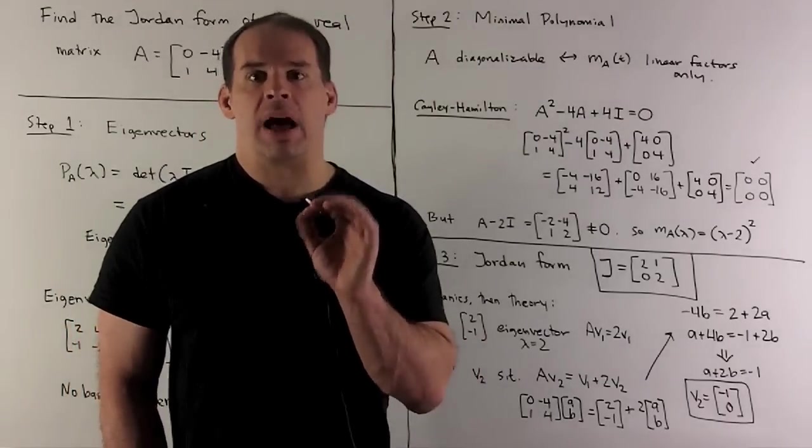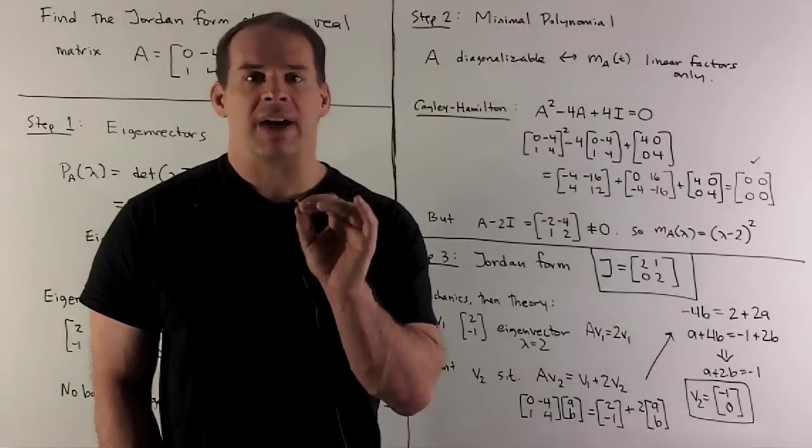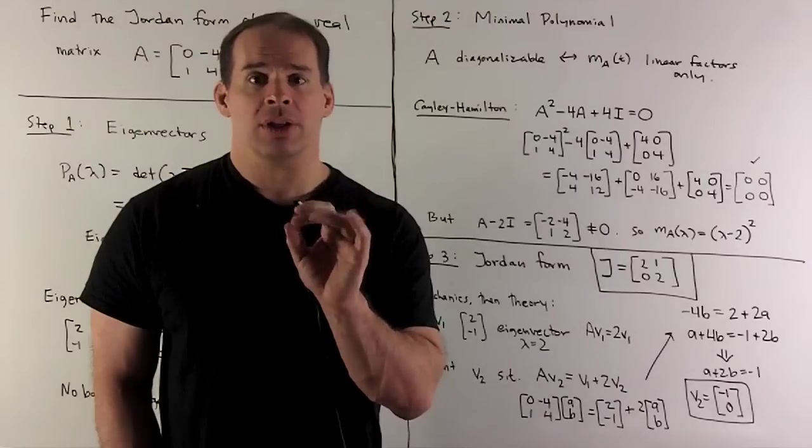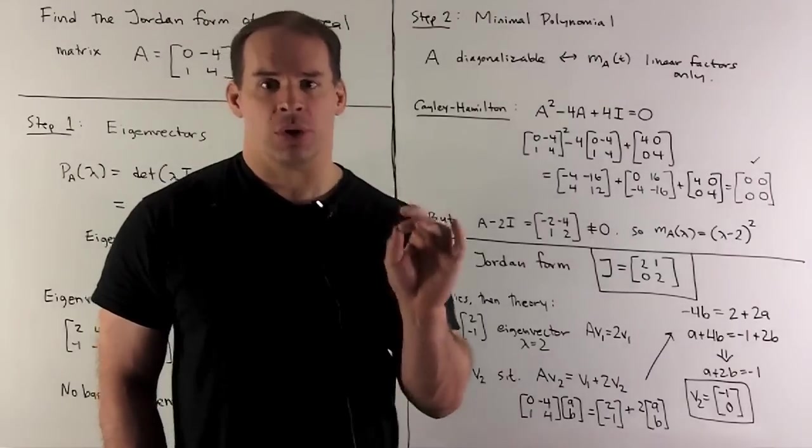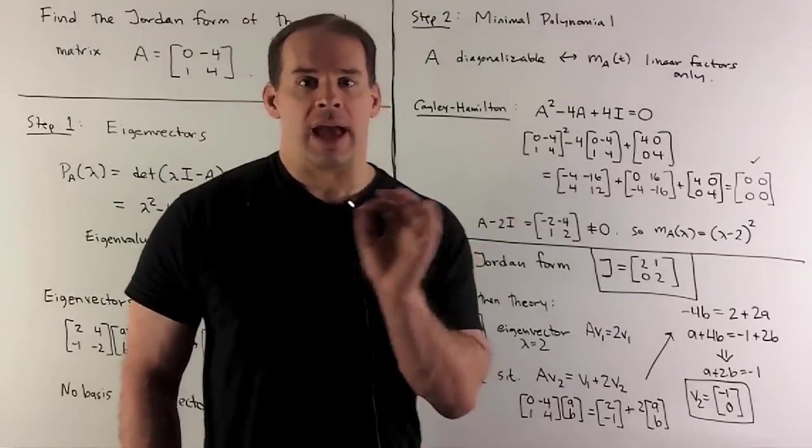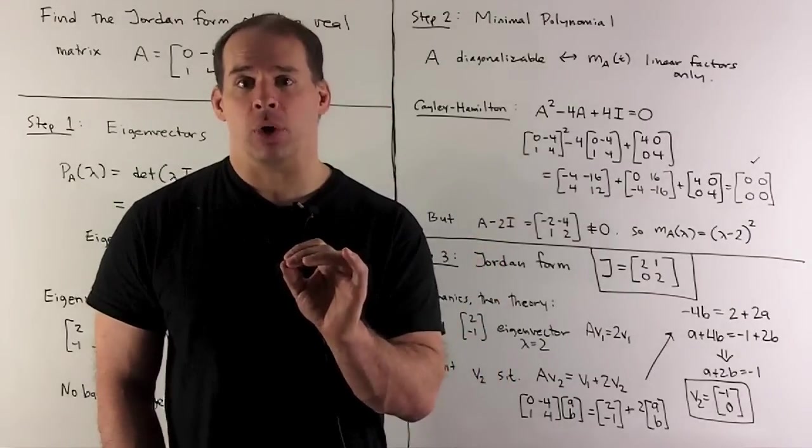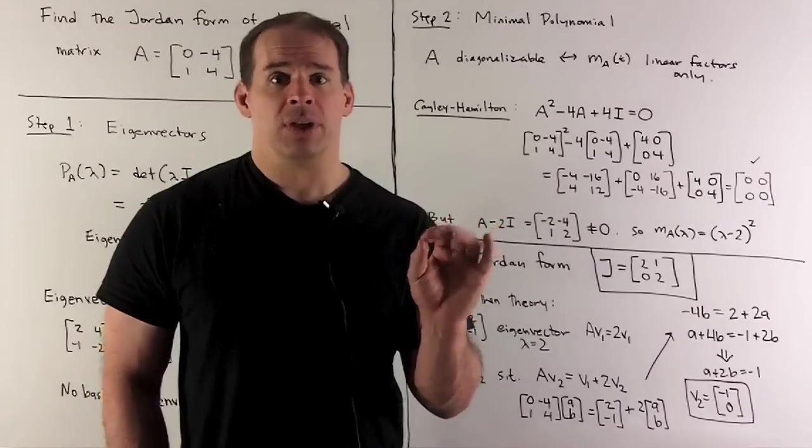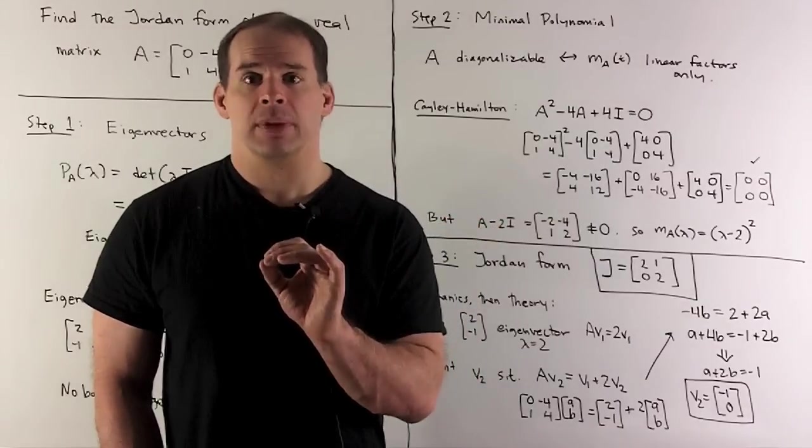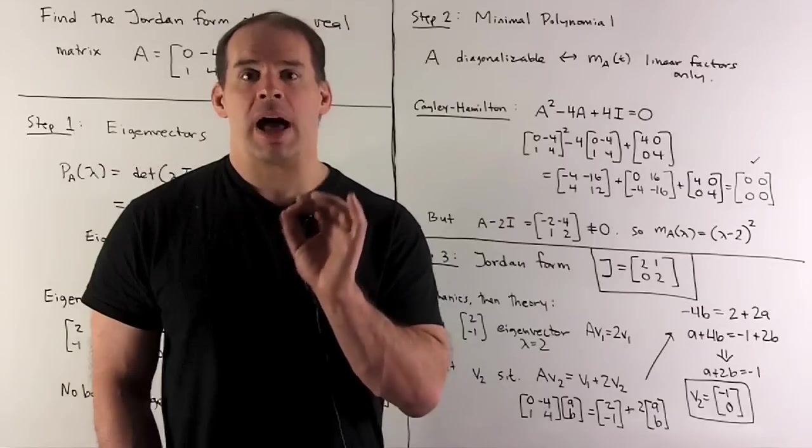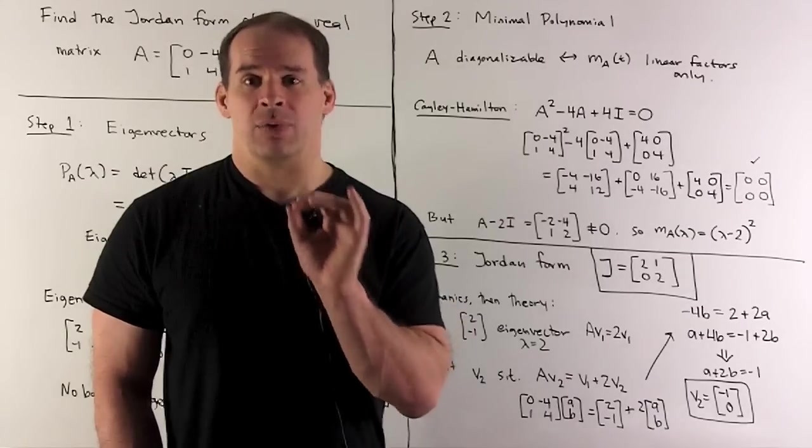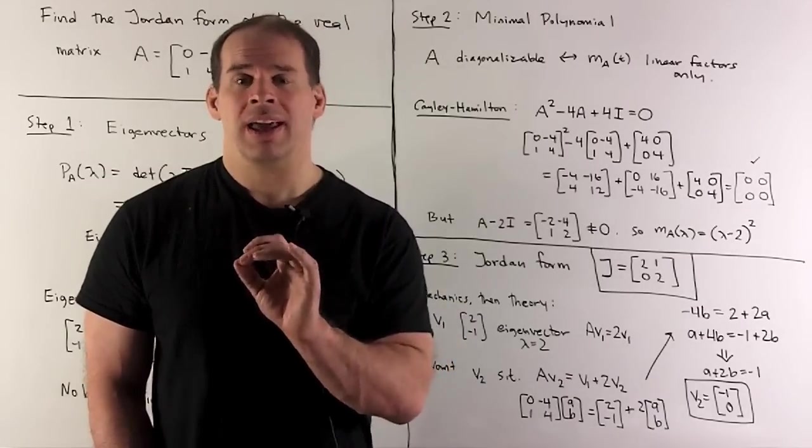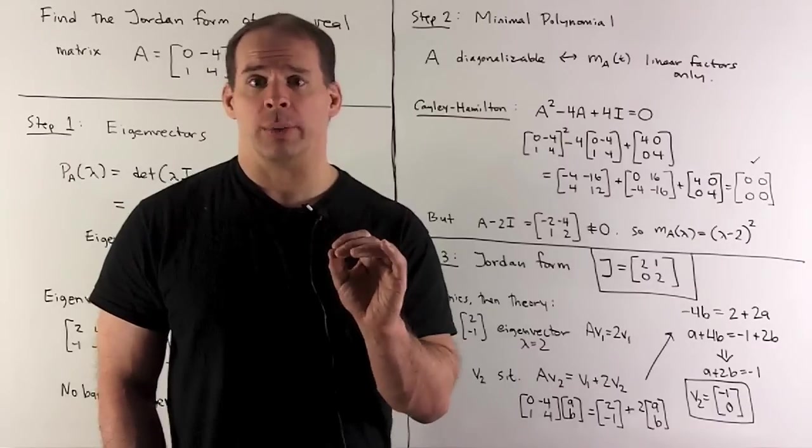The idea behind the minimal polynomial: we're trying to find the smallest polynomial, such that if I put my matrix in, zero comes out. Now, we know if we put our matrix into the characteristic polynomial, zero comes out. So we have at least one. The idea is, for the minimal polynomial, it'll be unique if we have lead coefficient one, and it's going to divide the characteristic polynomial.